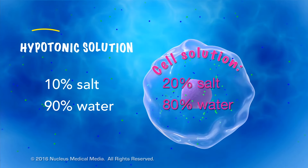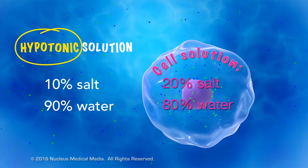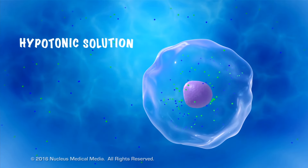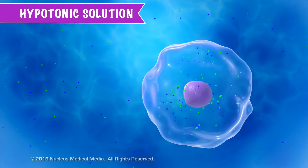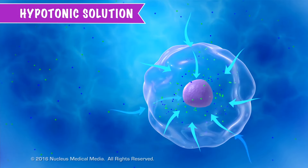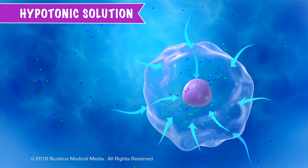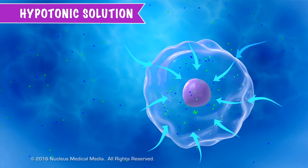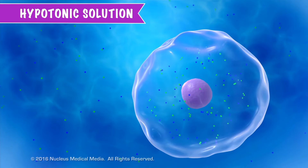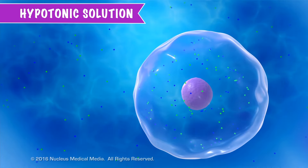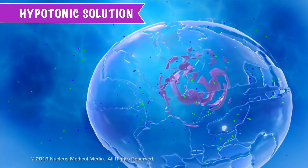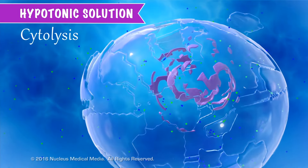We call a solution hypotonic when its concentration of water is higher than inside the cell, and its concentration of solute is lower than inside the cell. So, by osmosis, the water molecules will move passively into the cell until a state of equilibrium is reached. Hypotonic solutions cause a cell to swell up with water, and if the water concentration outside the cell is high enough, the cell can swell to the point of bursting — this is called cytolysis.